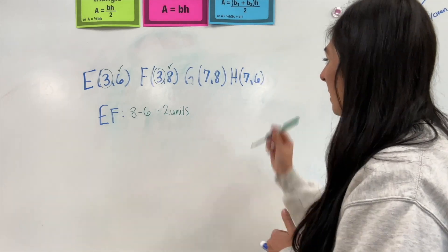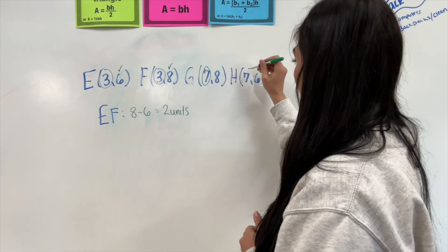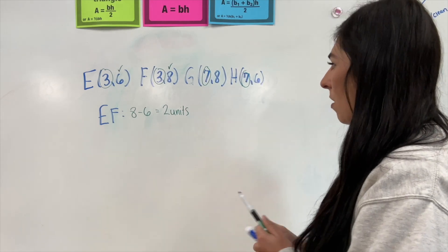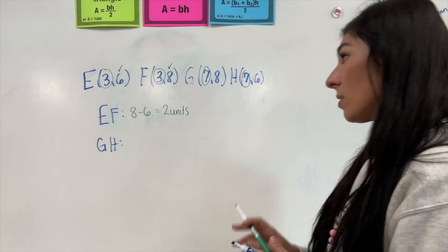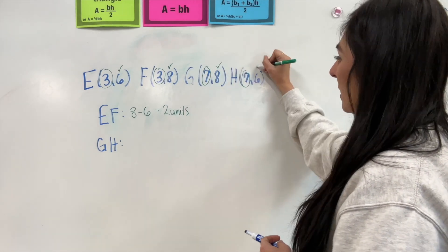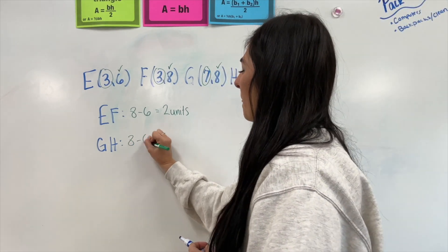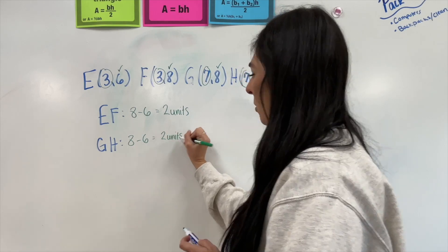Then, over here, I see that I have seven and seven. So, our matching ones are G and H. The ones that don't match are eight and six. Two units.